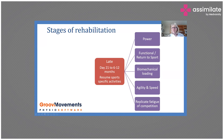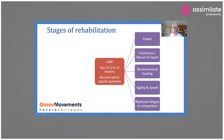Late rehabilitation can be from day one to six to twelve months post-injury — post-op rotator cuff repair, return to throwing, a swimmer after a SLAP lesion, or hip arthroscopy for labral repair. The goal is to return to pre-injury condition and resume sport-specific activities. We look at power, functional return to sport, biomechanical loading patterns, agility, and speed — ultimately replicating the fatigue of competition. For example, put a swimmer in the pool and see how many laps they can swim without symptoms.